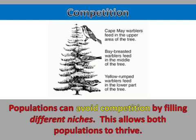Populations can avoid competition by filling different niches. This allows both populations to thrive. In this example, these three species of warblers live in different sections of the tree.